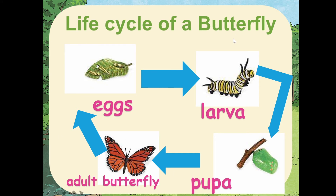So we call it a life cycle of a butterfly. As you can see, there are arrows pointing to the next stage, and from the adult butterfly it goes back to the eggs. Why do you think each arrow points to the next stage? It starts with the eggs, goes to being a larva, then a pupa, then an adult butterfly. And later on, the adult butterfly will lay some eggs, and these eggs will hatch into larva. So it goes around and around — that's why we call it a cycle.